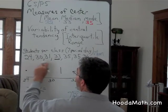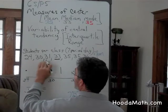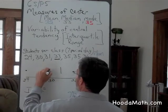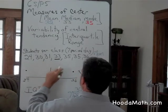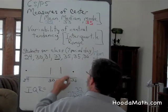We find the first quartile by finding the median of these three numbers, which would be 30. And the median of these three numbers, the center number, would be 35.